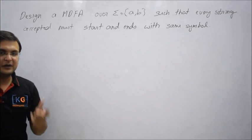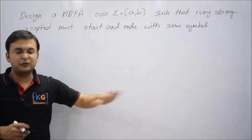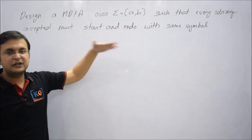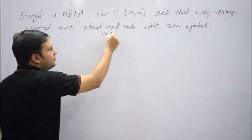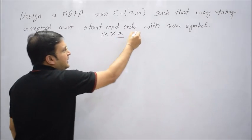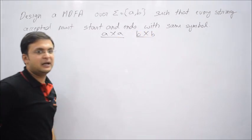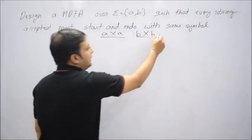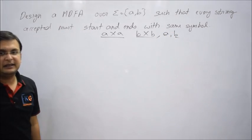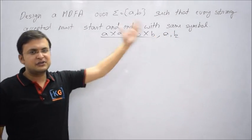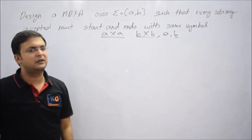This is a little bit different. It doesn't say you have to start and end from A specifically. What it says is start and end with the same symbol. So if you start with A then you must end with A, and if you start with B you must end with B. Two important points: is single A and single B acceptable? Certainly yes, because single A starts and ends with A, and single B starts and ends with the same symbol.